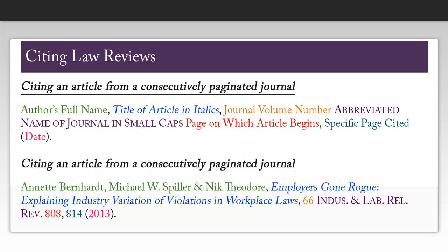Now we can create our citation. There are a few things to note. When you have multiple authors, you want to make sure you use an ampersand rather than the word 'and' before the last author's name. Also note that the title of the article is in italics. When we put the journal volume number, we just put 66 — we did not also include the 4 that was in parentheses. This is because it is consecutively paginated, so someone would be able to find out which issue it was from. A reminder that the short form of the journal — in this case, Industrial and Labor Relations Review — can be found by using Table T13 in the Blue Book.